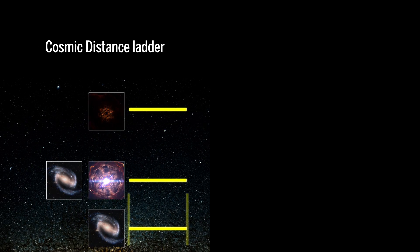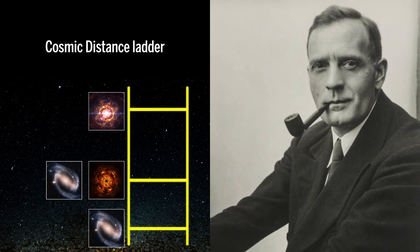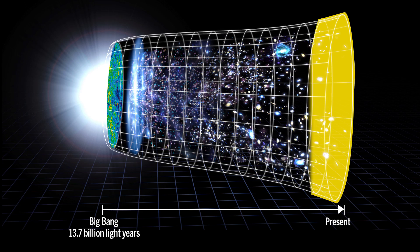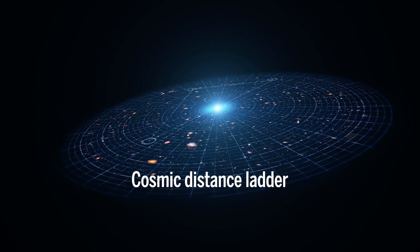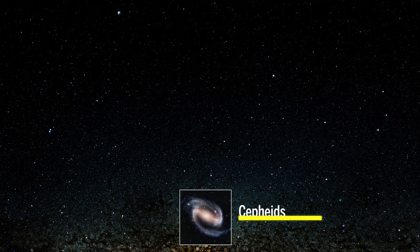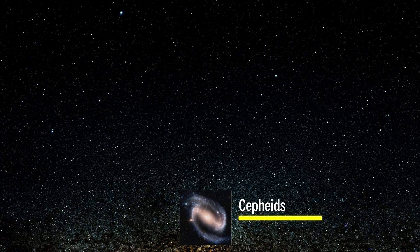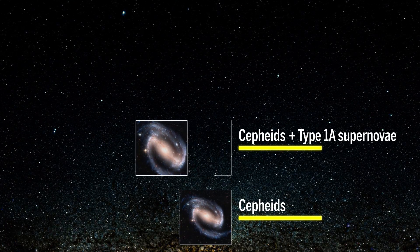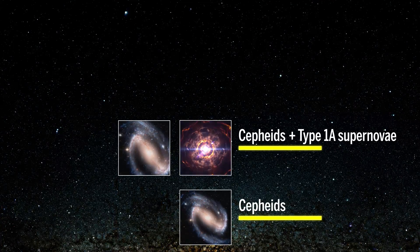The first method used to calculate the Hubble constant originated with Hubble himself. He started by measuring distances to nearby galaxies and working his way out — hence the name, the Cosmic Distance Ladder. The first rung is within our Milky Way, where we measure distances to Cepheids, pulsating stars that have an intrinsic brightness. Then we look to nearby galaxies that contain both Cepheids and another type of standard candle: Type Ia supernovae.